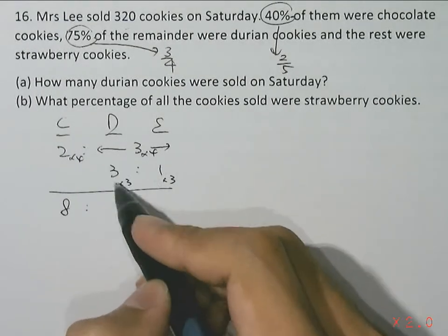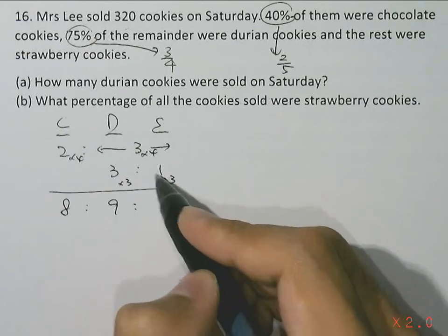So chocolates would be 2 times 4, 8. Durian, 3 times 3, 9. Strawberries, 1 times 3, 3.